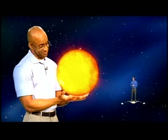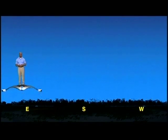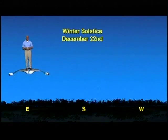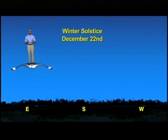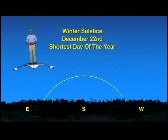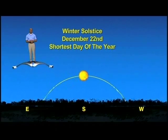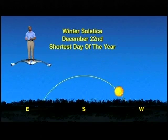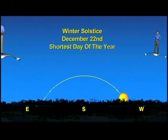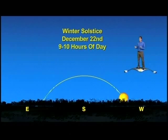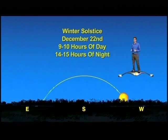Now let's see how our tilt affects the view from down on Earth. We have our skies set to December 22nd, just before sunrise. Let's trace the path that the sun takes across the sky on this, the shortest day of the year. The sun will rise south of east and reach its highest point in the southern sky around noon, then set south of west. For most of the country, you'll get about 9 or 10 hours of daylight on this day — that also means 14 to 15 hours of darkness.